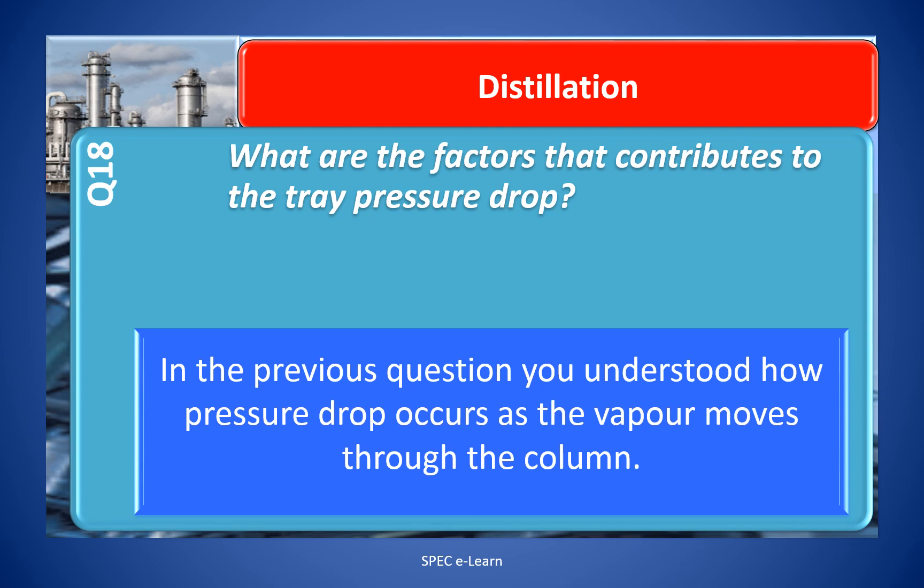In the previous question, you understood how pressure drop occurs as vapor moves through the column. Here, the question is different. What the experts sitting in the interview committee are interested in are the relevant tray parameters that contribute to the pressure drop. Remember, a tray is a vapor-liquid contact element. It generates vapor bubbles, thereby creating interfacial area for mass transfer. There is good mixing on the tray. So the pressure drop arises from more than one source.